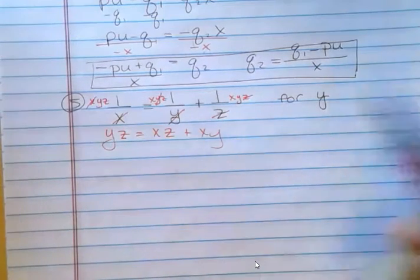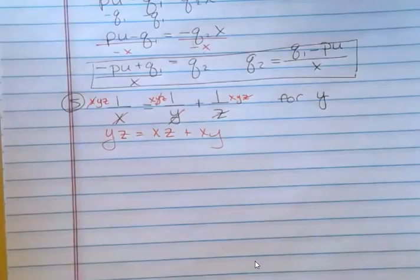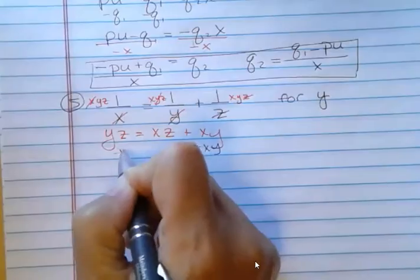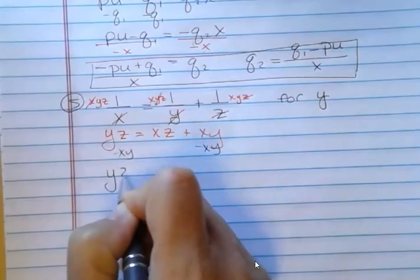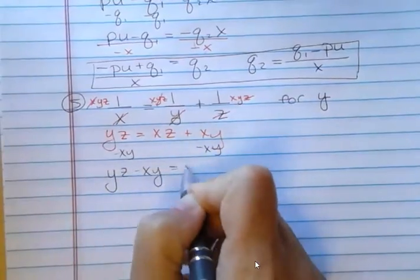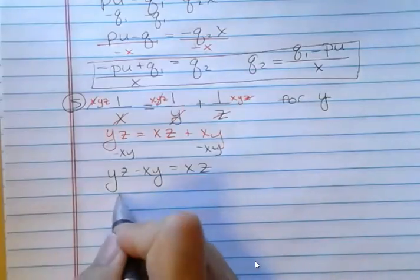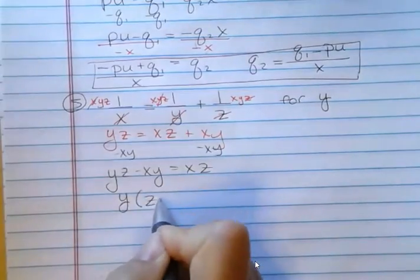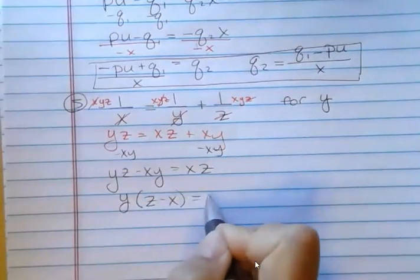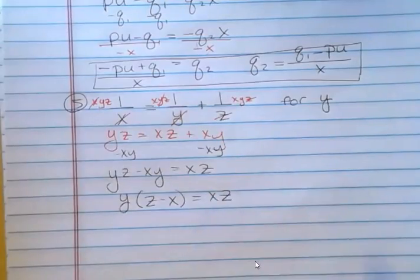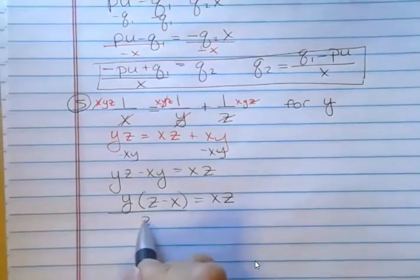Just like the other one we did a couple of steps ago, we're solving for y, so we need to get our y terms together. So I'm going to subtract x, y from both sides. And then factor out the y. And then divide both sides by the binomial z minus x.